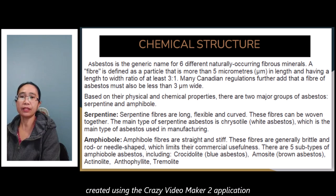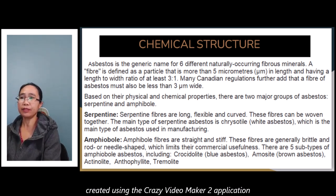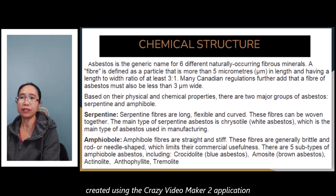Many regulations further specify that a fiber of asbestos must also be less than three micrometers in diameter. Based on their physical and chemical properties, there are two major groups of asbestos: serpentine and amphibole. Serpentine fibers are long, flexible, and curved, and can be woven together. The main type of serpentine asbestos is chrysotile, or white asbestos, which is the main type used in manufacturing.